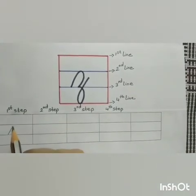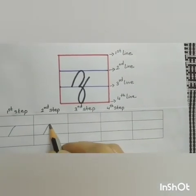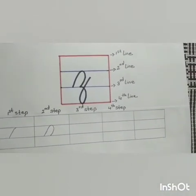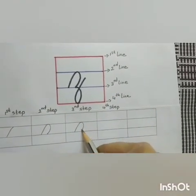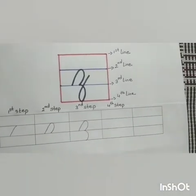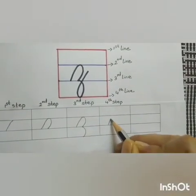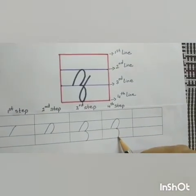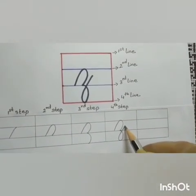Start from the 3rd line, go up to the 2nd line. Then, make a right curve and go down to the 3rd line. Again, make a right curve from the 3rd line to the 4th line. Then, making a loop, go back up and finishing a little above the 3rd line.